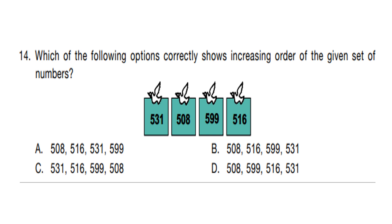Question number 14. Which of the following options correctly shows the increasing order of the given set of numbers? Increasing order means from smallest to largest. The numbers given are 531, 508, 599, 516. The smallest is 508, then 516, then 531, and last is 599. Answer is option A: 508, 516, 531, 599.